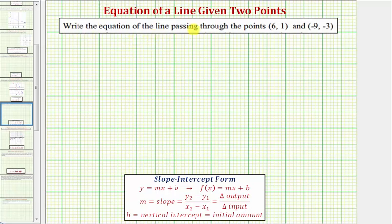We're asked to write the equation of the line passing through the points six comma one and negative nine comma negative three. We'll determine the equation in slope-intercept form, which is the form y equals mx plus b, where m equals the slope of the line, which is equal to the change in the output divided by the change in the input.